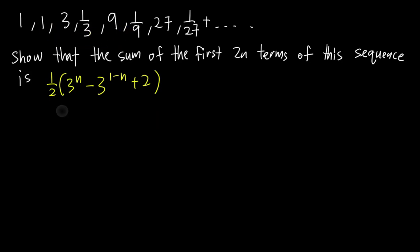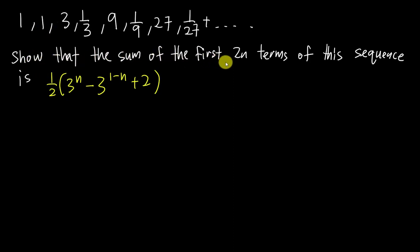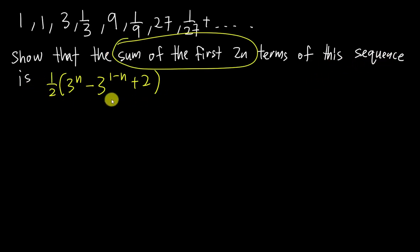Let's look at these very difficult progression questions. This kind of question is very challenging because you cannot directly get your r value (ratio value) by doing the second term divided by the first term. You need to understand what the question wants before you can move on. The question gives you a sequence and asks you to show that the sum of the first 2n terms equals one half times (3^n minus 3^(1-n) plus 2).